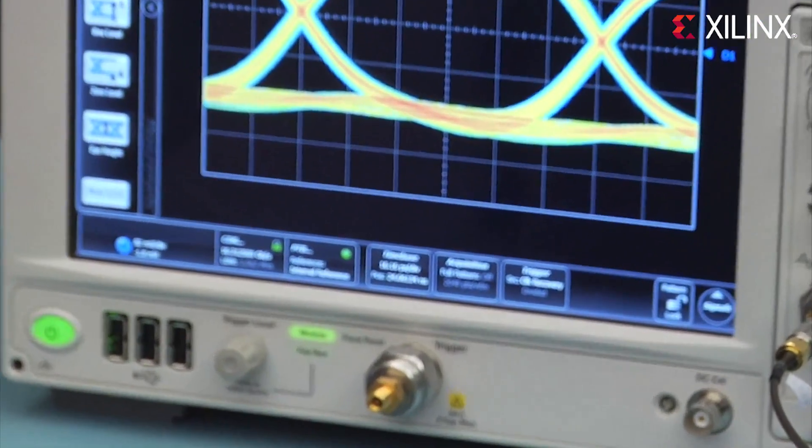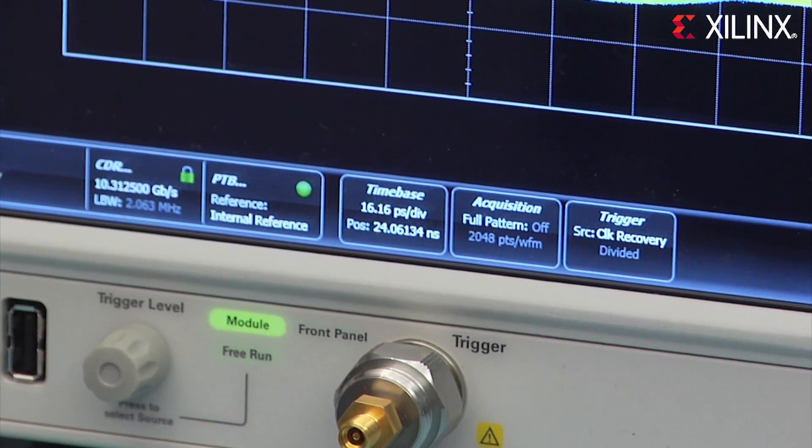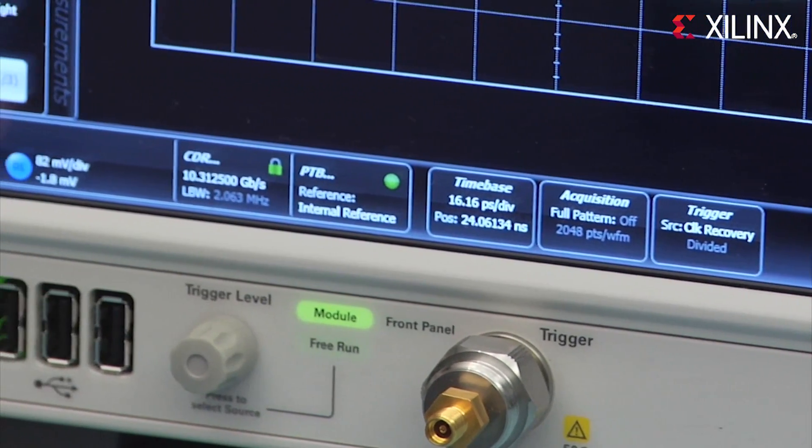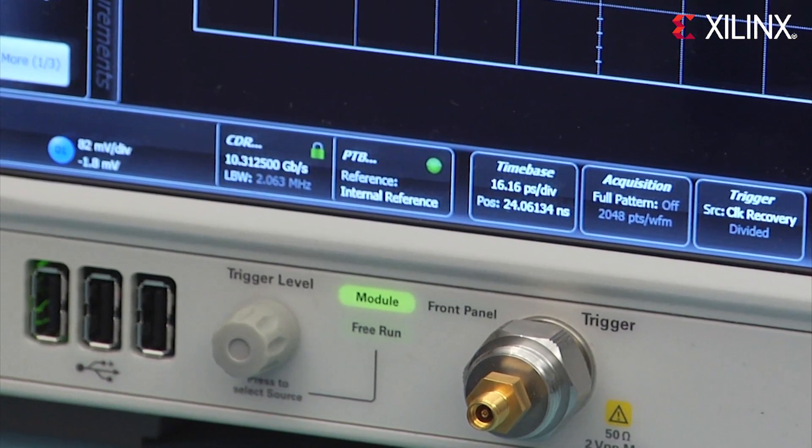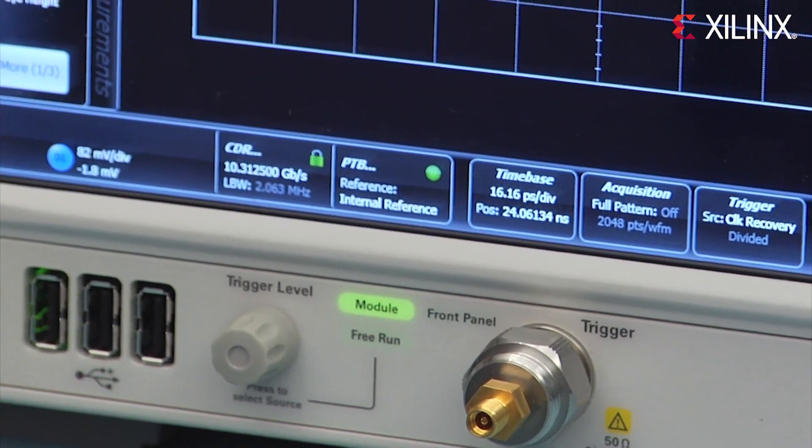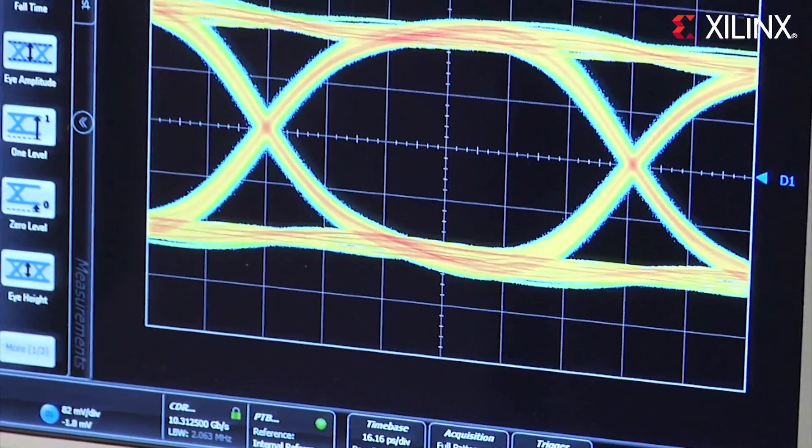I just wanted to point out a few items about the eye here. You can see on the scope on the bottom left, we're measuring the eye. It shows here on the scope 10.3125 gigabits per second. And at this data rate, there's lots of margin here. Exceptionally low RJRMS jitter. And this is just what we'd like to see.